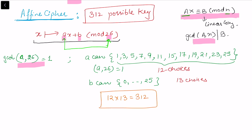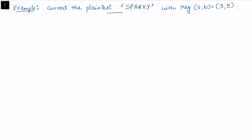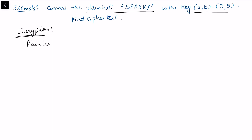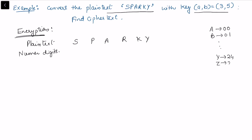Now in this example, the plain text is 'sparky' and we need to find the cipher text using the affine cipher. We write the alphabets S, P, A, R, K, Y and their corresponding numerical digits. Using the standard table where A=0, B=1, ..., Y=24, Z=25, we get: S=18, P=15, A=0, R=17, K=10, Y=24.